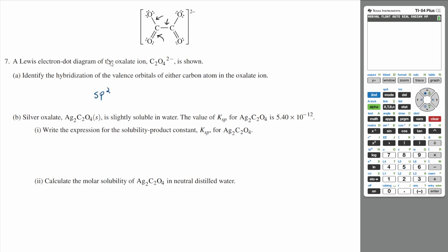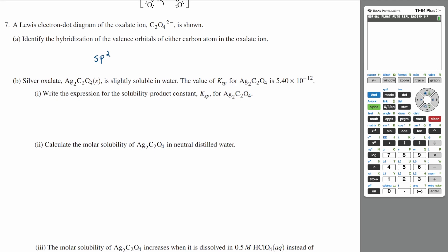All right, let's go on to part B. Silver oxalate, Ag2C2O4, is slightly soluble in water. The value of KSP for Ag2C2O4 is 5.40 times 10 to the negative 12th. Part i: write the expression for the solubility product constant KSP for Ag2C2O4.